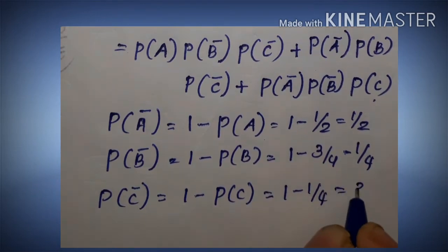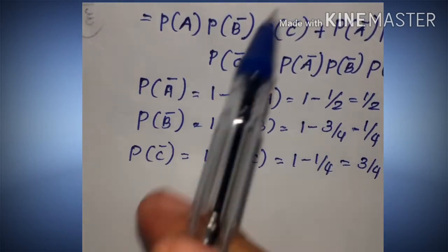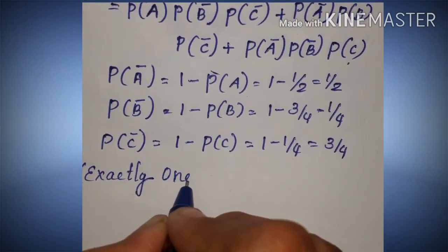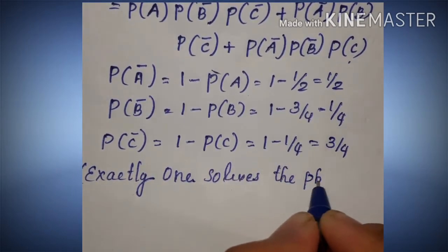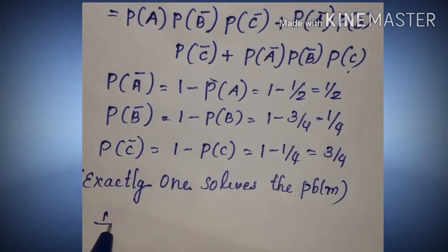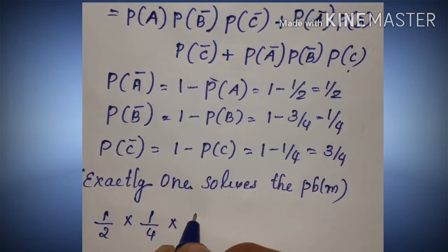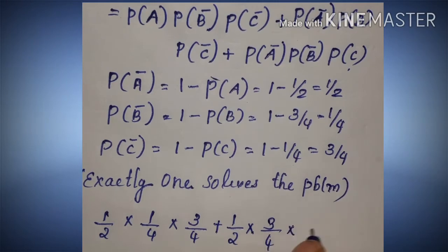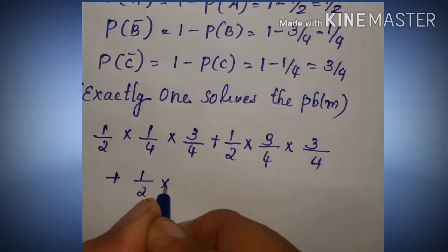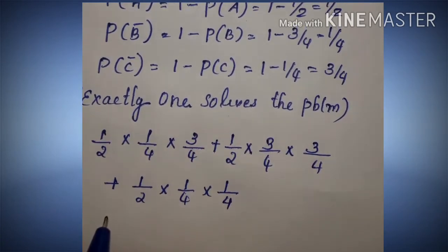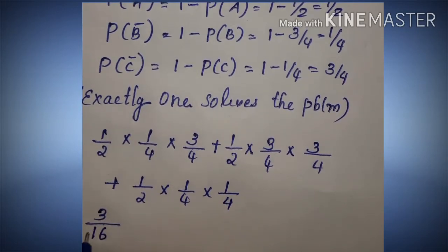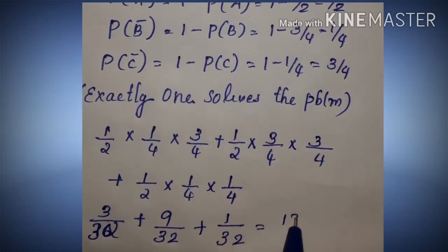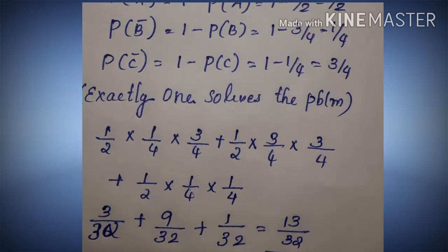The result equals 3 by 4, exactly 1 solves the problem. P of exactly 1 solves the problem equals P(A) times P(B complement) times P(C complement), which is 1 by 2 times 3 by 4 times 1 by 4, plus P(A complement) times P(B) times P(C complement), which is 1 by 2 times 1 by 4 times 1 by 4. This gives 3 by 16. Overall the answer is 9 by 32 plus 1 by 32, giving 13 by 32.